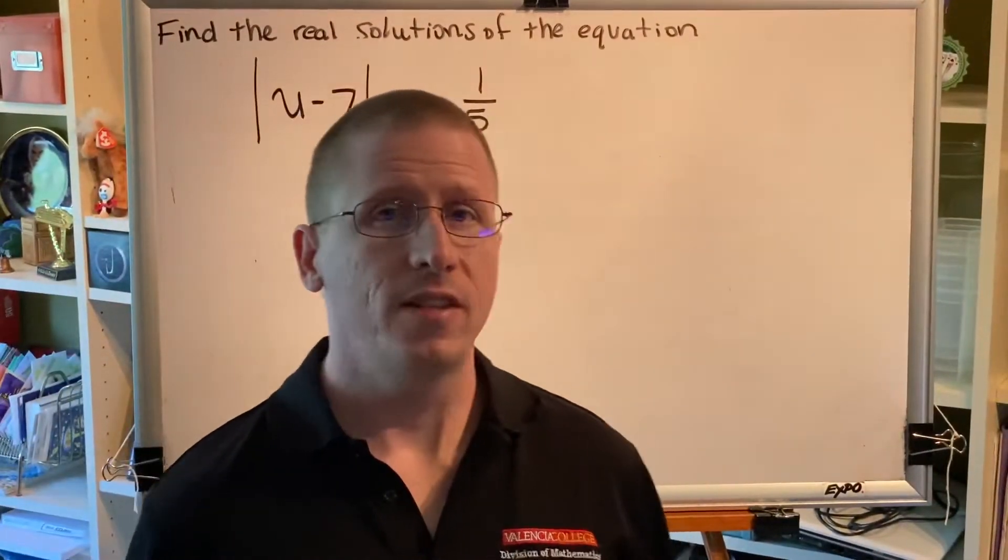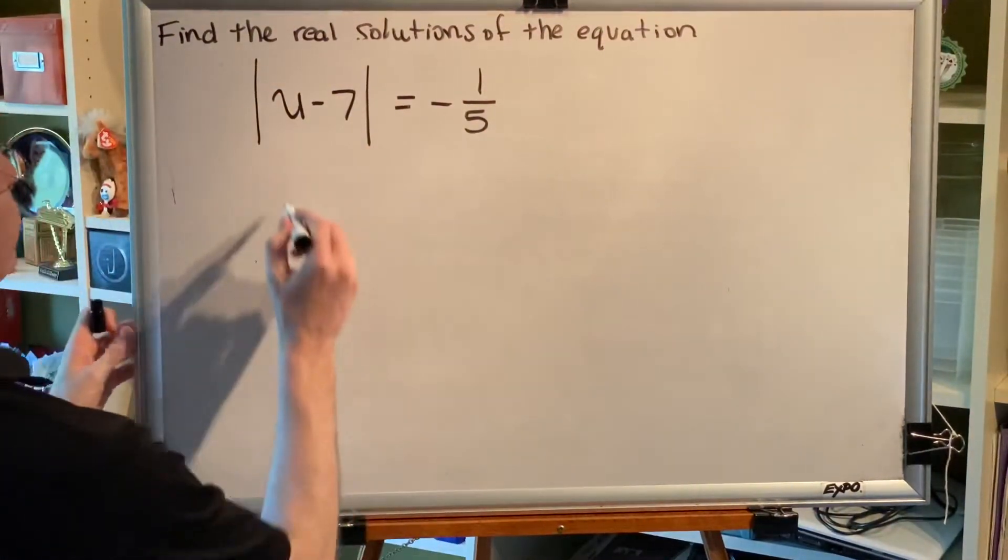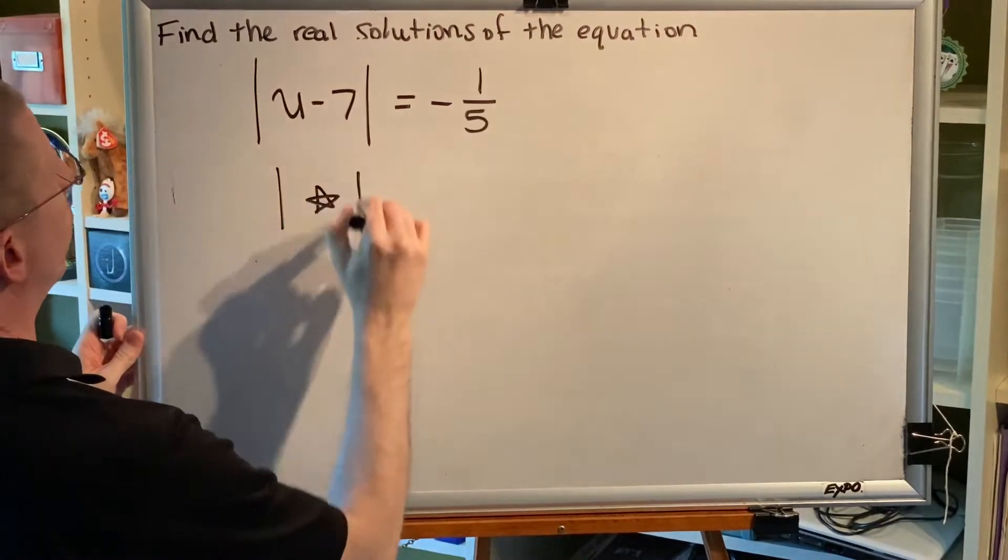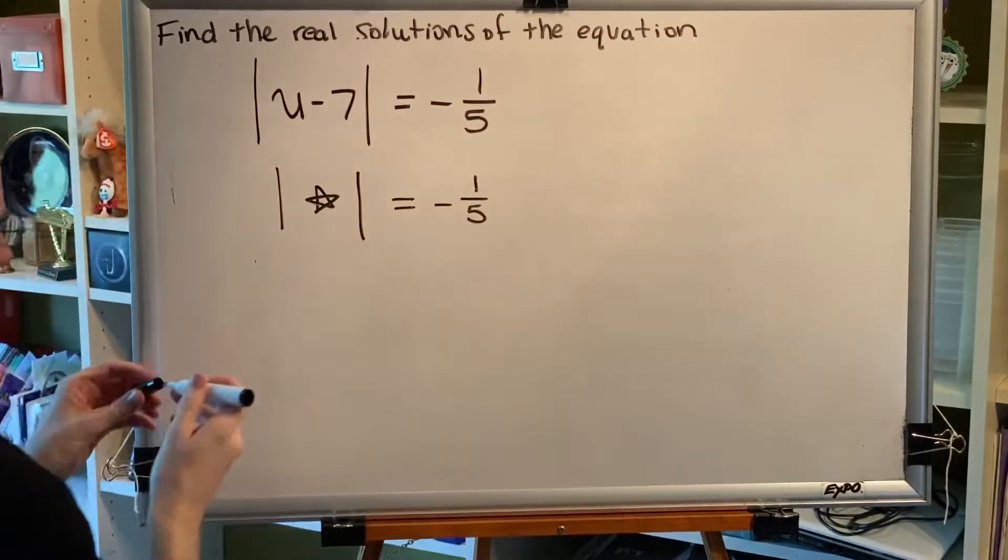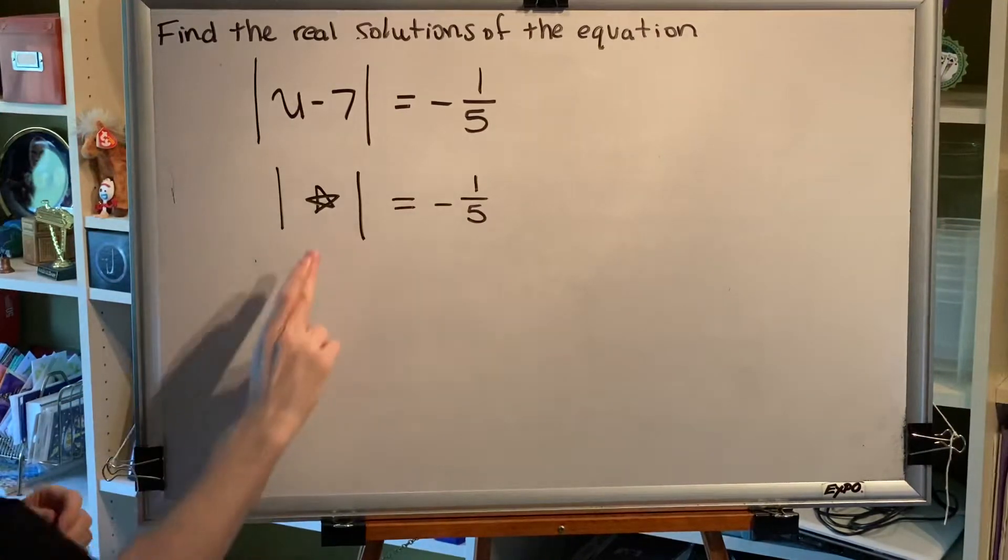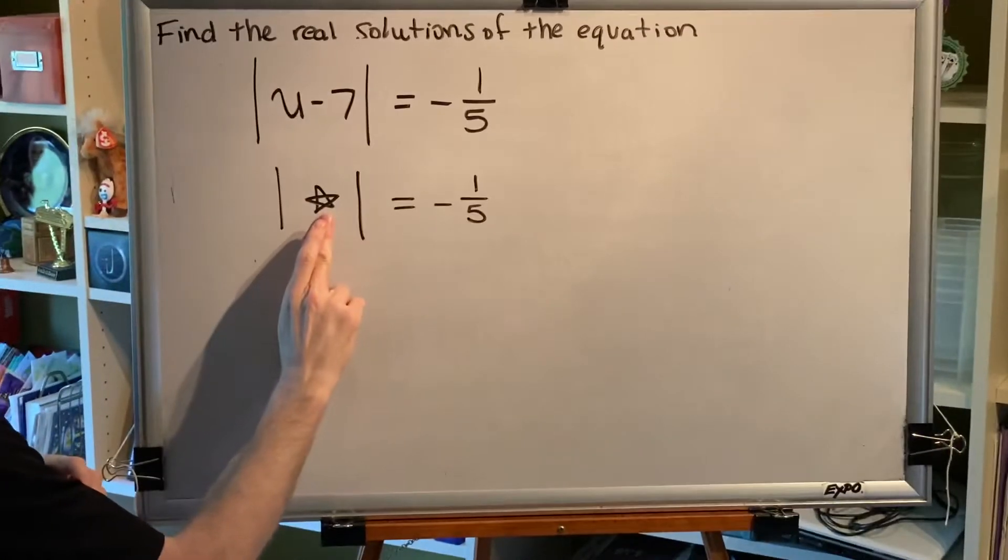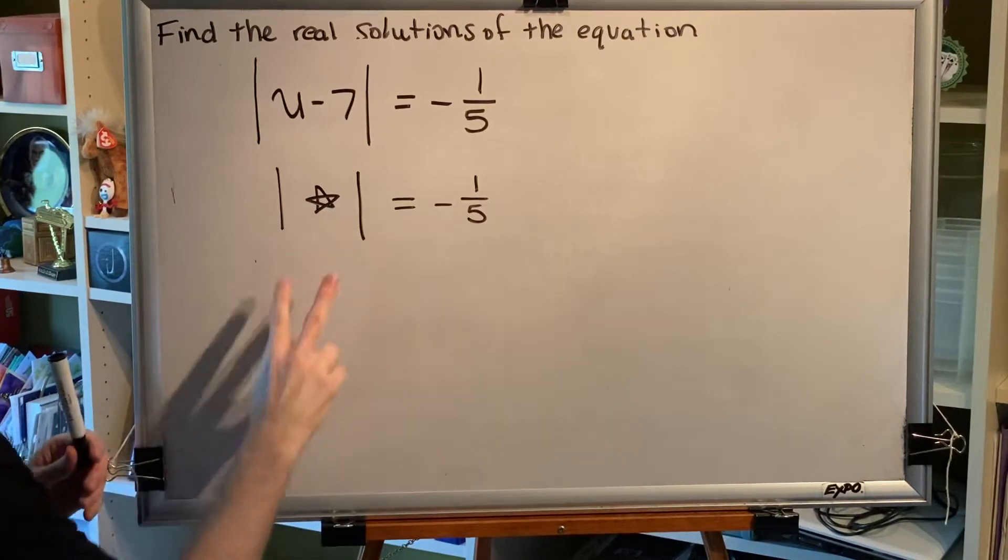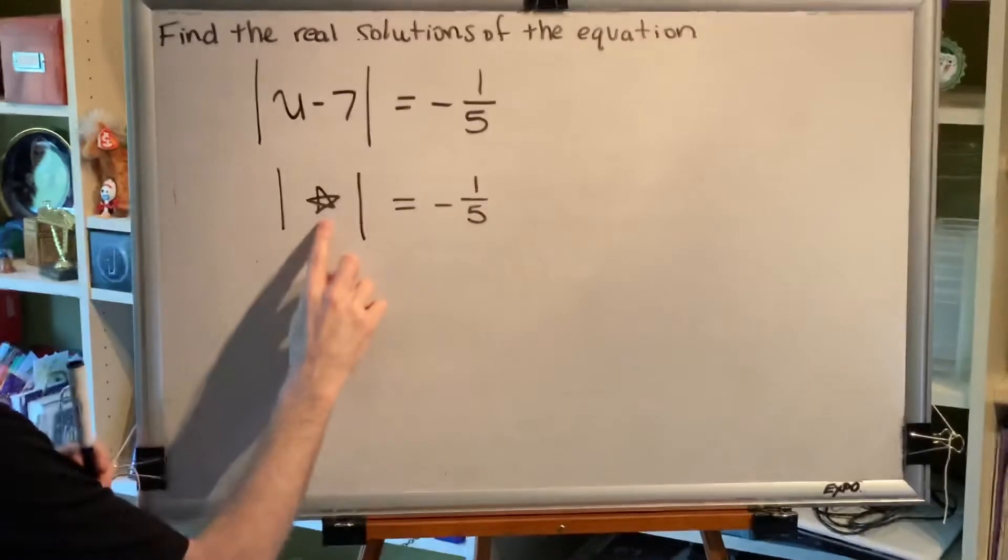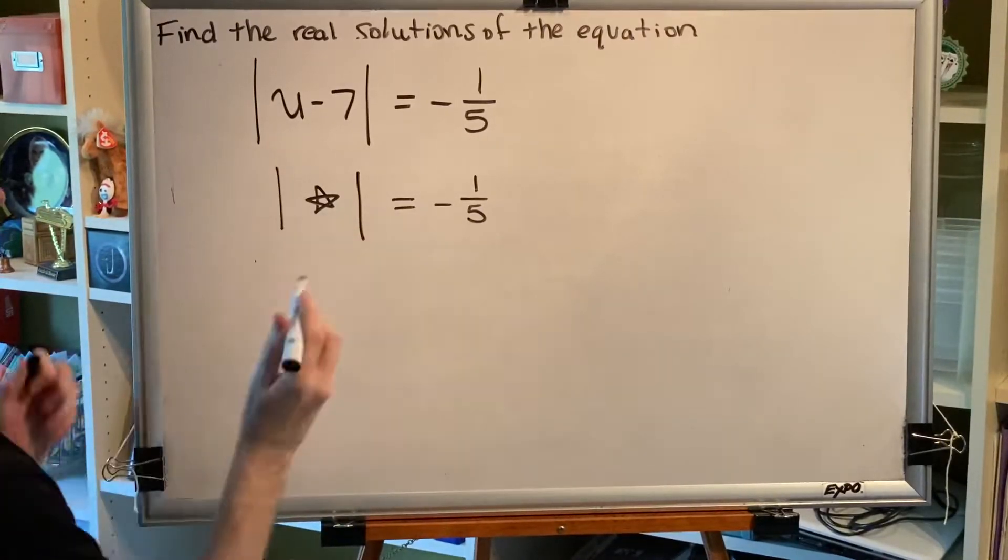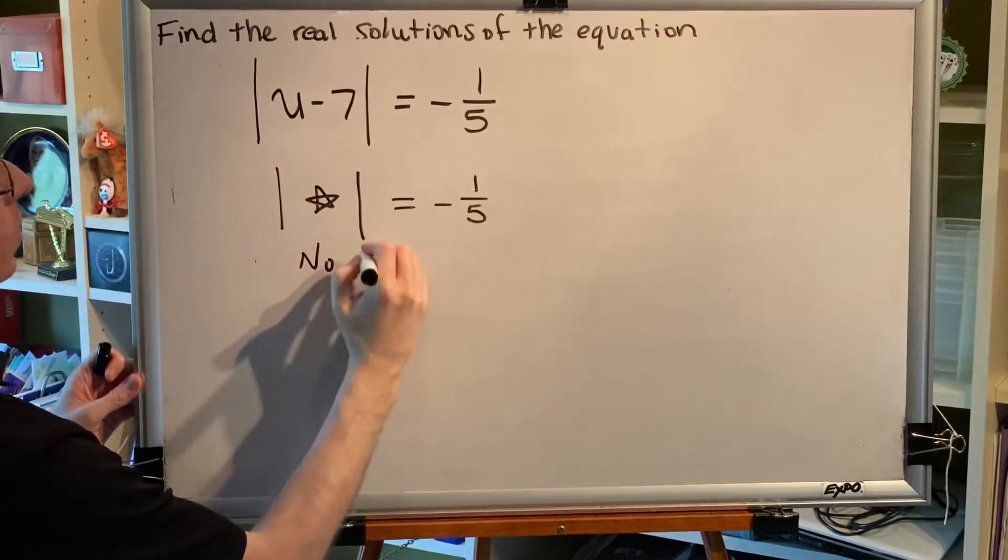First, replace the expression inside the absolute value bars with star. Next, ask yourself, what number can you replace star with to make the equation true? Well, when you take the absolute value of a number, the result will be positive or zero, not negative. Therefore, there is no solution to this equation.